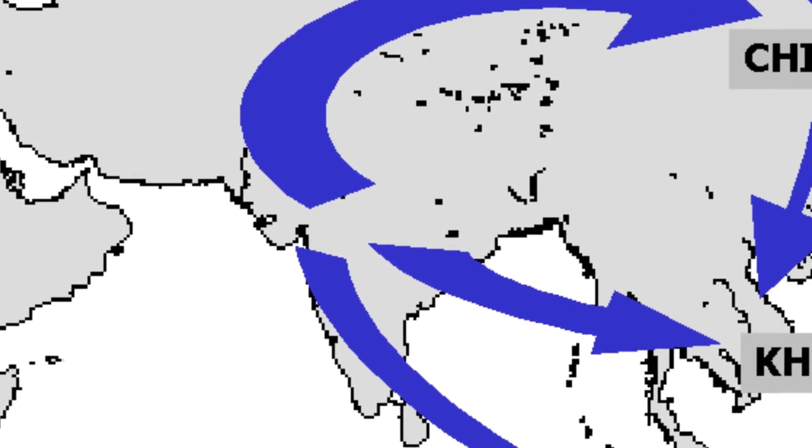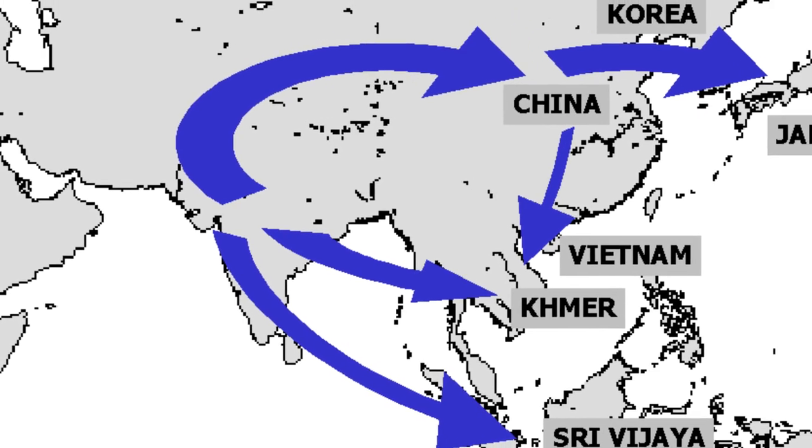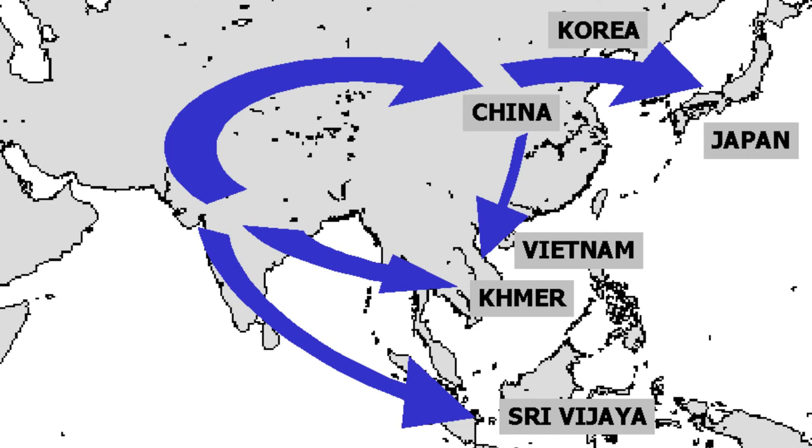Mahayana Buddhism spread from India along the trade routes in Central Asia including the Silk Road. It spread to China and from there to the rest of East Asia, primarily Korea and Japan.